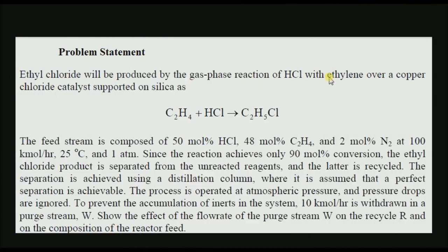Ethyl chloride will be produced by the gas phase reaction of HCl with ethylene over a copper chloride catalyst supported on silica. The feed stream compositions are given at 100 kmol per hour, 25 degrees Celsius, and 1 atm. Since the reaction achieves only 90% conversion, the ethyl chloride product is separated from the unreacted reagent and the latter is recycled. The separation is achieved using a distillation column where a perfect separation is assumed. To prevent accumulation of inerts, 10 kmol per hour is withdrawn in a purge stream.